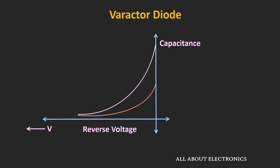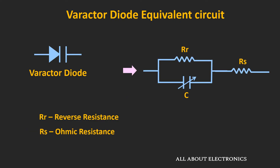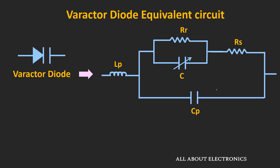Now let's see the equivalent circuit of the varactor diode. When reverse bias voltage is applied, the equivalent circuit includes Rr — the reverse resistance of the diode — and Rs, the ohmic resistance. Typically, the value of reverse resistance is in megaohms, because only a leakage or reverse saturation current flows through the diode when reverse biased. For the varactor diode, this reverse resistance should be as high as possible to minimize leakage current. This is the equivalent circuit at low frequencies. When operated at high frequencies, parasitic capacitance and inductance must also be considered in the equivalent circuit.